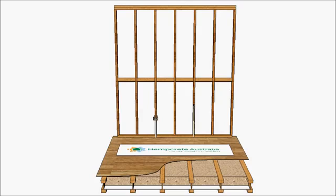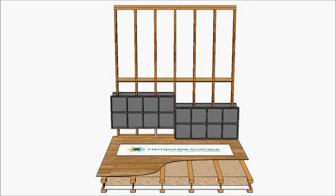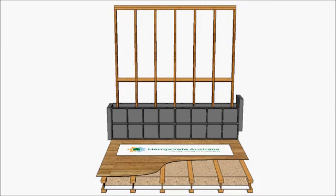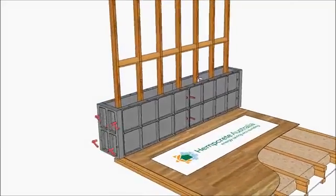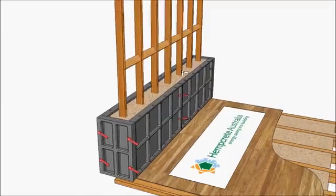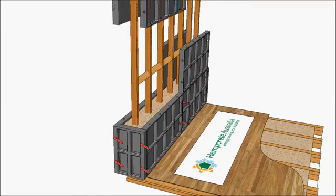To create the wall, we use recycled plastic formwork that easily assembles. The hempwood, lime, binder and water are mixed and placed into the formwork surrounding the load-bearing frame.